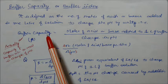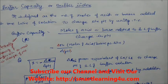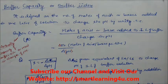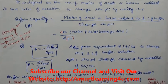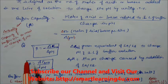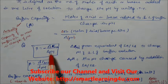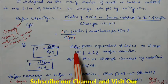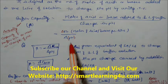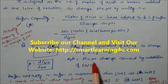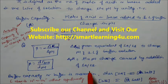Buffer capacity means that even after adding acid or base, the pH will change very little or almost not at all. We will see what is the maximum and minimum capacity of a buffer. We write beta equal to minus delta C of HA divided by delta pH for acid, or delta C of base divided by delta pH for base. Delta n is the gram equivalent of strong acid or base needed to change the pH of one liter of buffer solution.